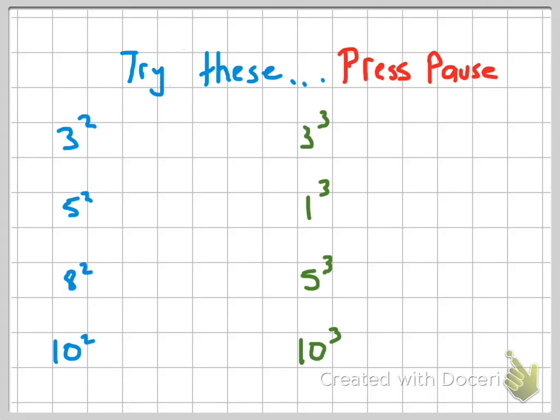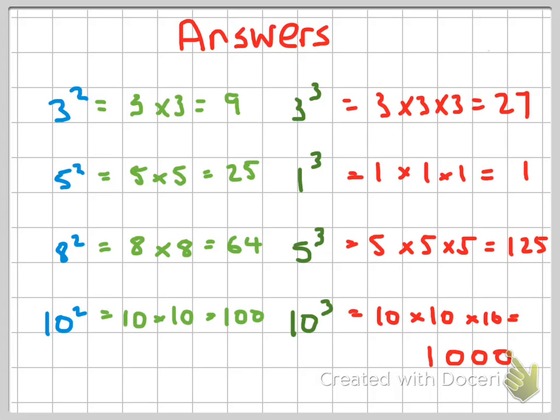If you'd like to practice a couple, press pause now and try these. Great, now you're back — let's go through the answers. Three squared equals nine. Five squared equals 25. Eight squared equals 64. Ten squared equals 100. And the cubed ones: three cubed equals 27, one cubed equals one, five cubed equals 125, and ten cubed equals a thousand.